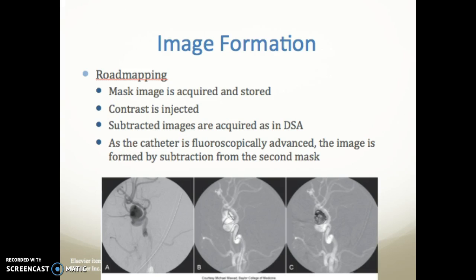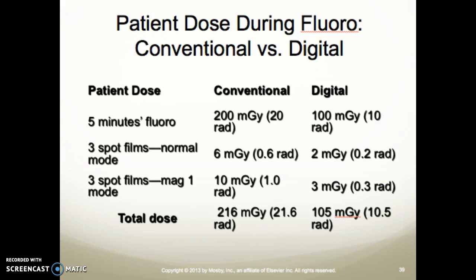Road mapping involves acquiring and storing mask images, injecting contrast, acquiring subtracted images via digital subtraction, and as the catheter is fluoroscopically advanced, forming images by subtraction from a second mask. Regarding dose comparison — conventional versus digital — five minutes of fluoroscopy gives about 20 rad conventional versus about 10 rad digital. Spot films in normal mode: 0.6 rad conventional versus 0.2 rad digital. The total dose using digital is about half, which is a significant reduction.